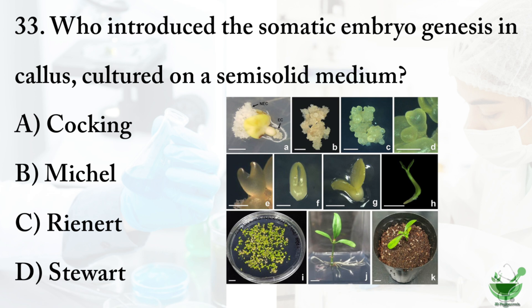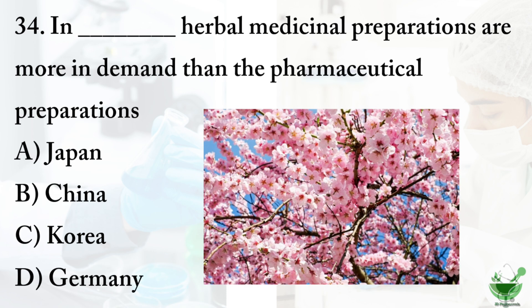Question 33: Who introduced somatic embryogenesis in callus cultured on a semi-solid medium? Option A: Choking, option B: Mitchell, option C: Rainet, option D: Steward. The correct option is C, Rainet.